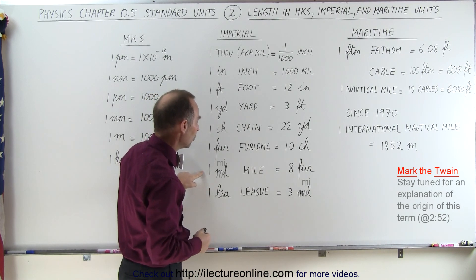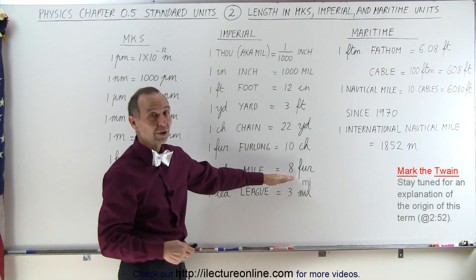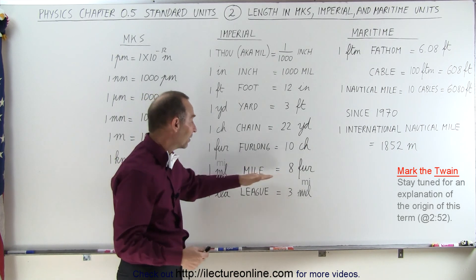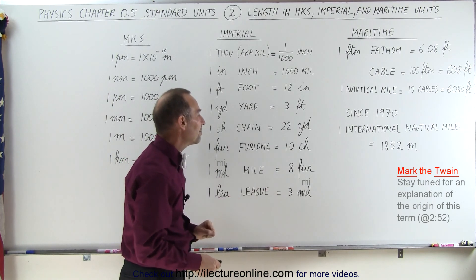A mile, of course, a lot of us know what a mile is, but in terms of furlongs it is eight furlongs. Eight times an eighth of a mile is of course a mile. And then we have what we call a league, which is three miles.